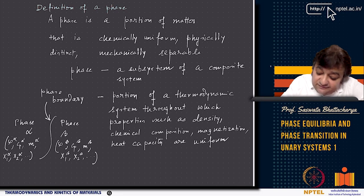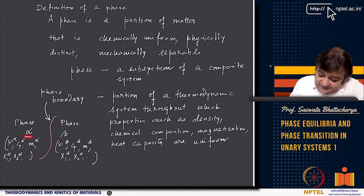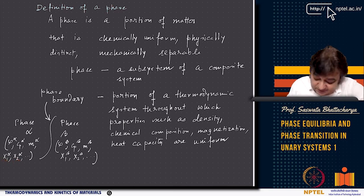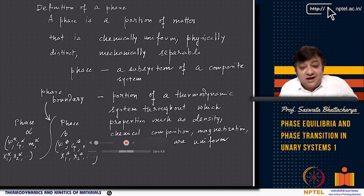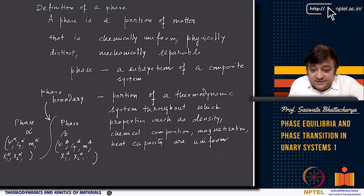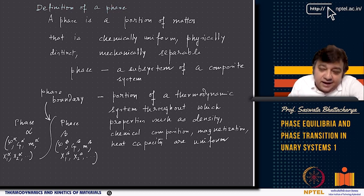Schematically, on one side you have alpha phase and on the other side beta phase. The alpha phase is characterized by a uniform density ρ_alpha, a uniform heat capacity, magnetization, and mole fractions x1_alpha, x2_alpha. It also has its own energy and molar volume. Similarly, beta phase has its own unique lattice parameter and density.